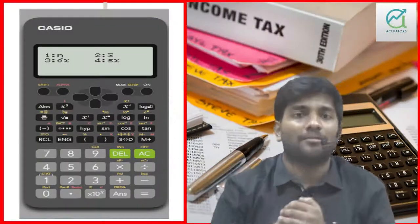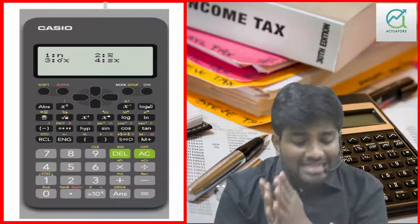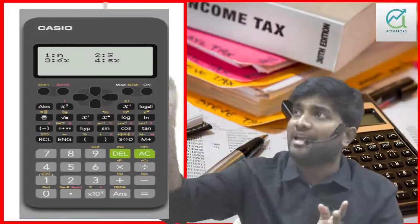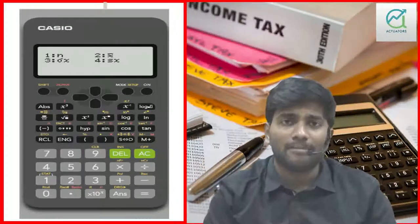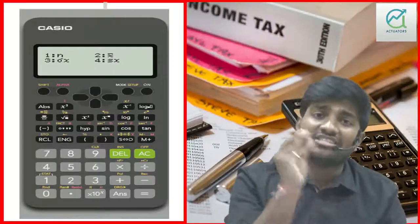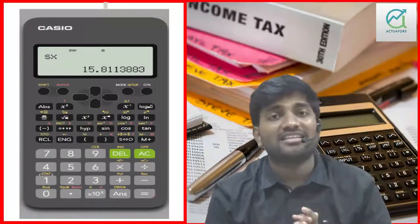Shift, 1, 4 gives you sigma-x and sx. Sigma-x is the population standard deviation, and sx is the sample standard deviation. Since I have taken a sample of 10, 20, 30, 40, 50 — a sample size of 5 — I use sx. Standard deviation is the square root of variance.